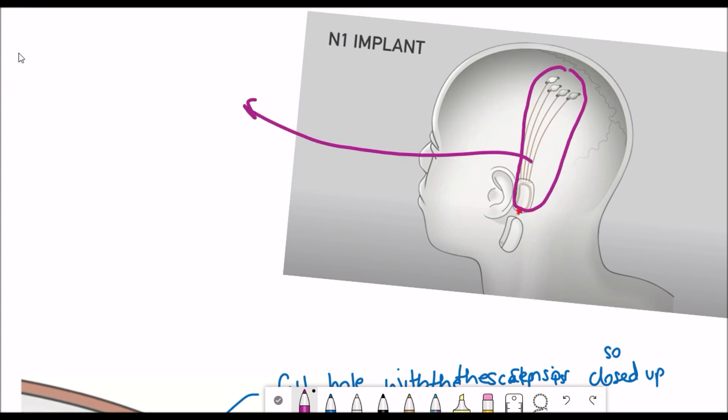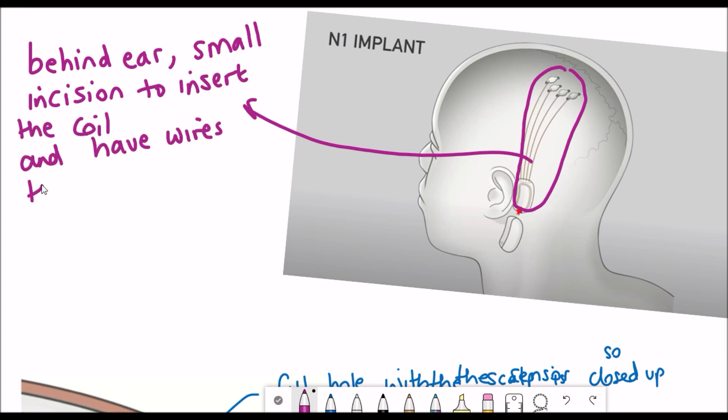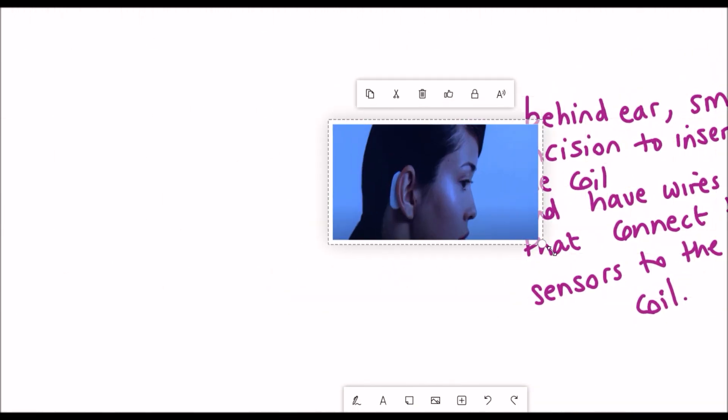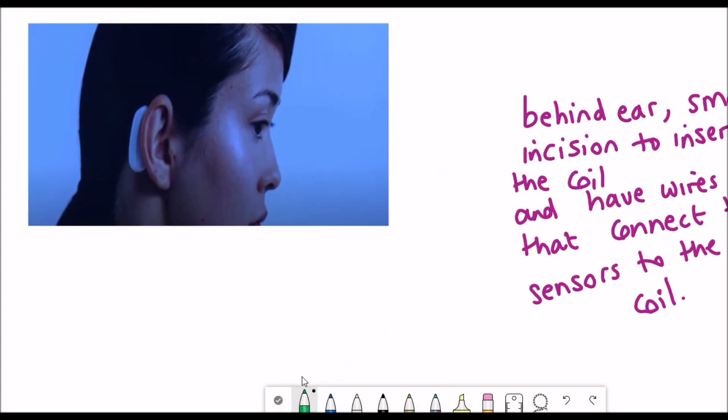But that is not the only incision that needs to be made. To get the information from the electrodes there also needs to be a small incision behind the ear to insert a coil and what this coil does is it's connected to the sensors through these wires.